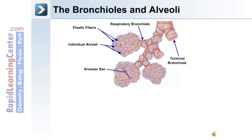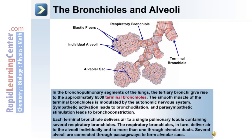This image depicts the respiratory bronchioles and the individual alveoli covered in elastic fibers. In the bronchopulmonary segments of the lungs, the tertiary bronchi give rise to approximately 6,500 terminal bronchioles. The smooth muscle of the terminal bronchioles is modulated by the autonomic nervous system — sympathetic activation leads to bronchodilation and parasympathetic stimulation leads to bronchoconstriction.